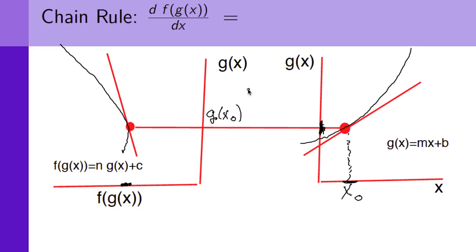Well, these are kind of complicated functions. I don't know what they are. But near x naught, we can draw the tangent given by this red blob here. And then we can write the equation of the tangent line for g as g of x is equal to mx plus b.